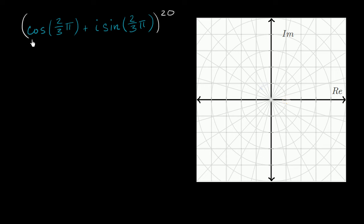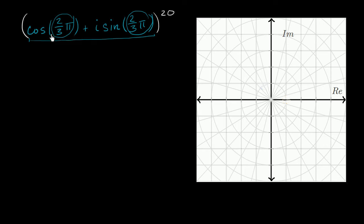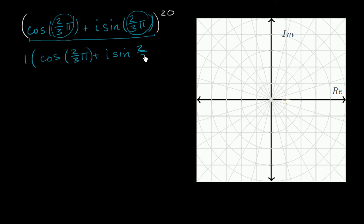So let's first focus on this blue complex number right over here. It's clearly written in polar form, and the angle is two-thirds pi, or two pi over three radians. And the magnitude of this complex number is clearly one. To make that a little clearer, you could write it in the pure polar form where you have its magnitude out front: one times cosine of two-thirds pi, plus i sine of two-thirds pi.